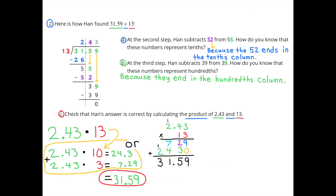B. At the third step, Hahn subtracts 39 from 39. How do you know that these numbers represent hundredths? I know that they represent hundredths because they end in the hundredths column.